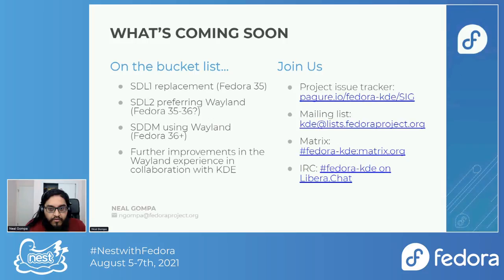If any of this excites you, come and join us in the Fedora KDE SIG. We have our issue tracker on pagure.io, a mailing list, our Matrix room, and our IRC channel — which is bridged into the Matrix room. If you're more of the async type, the issue tracker and the mailing list are great ways to collaborate with us.